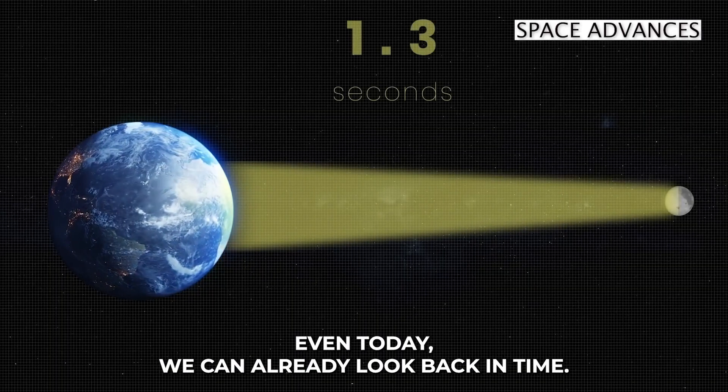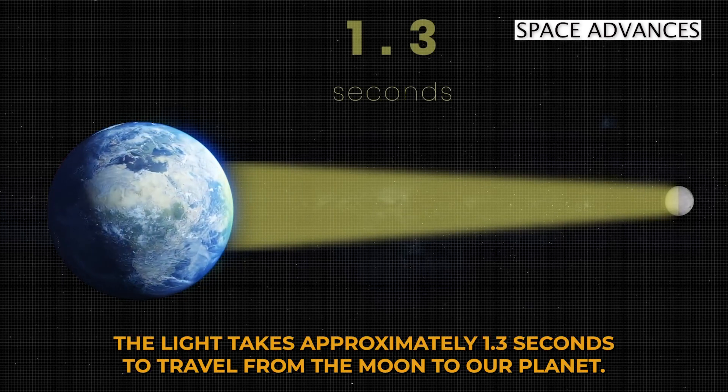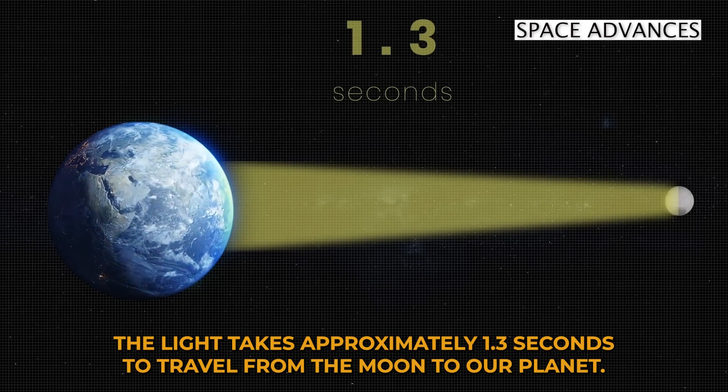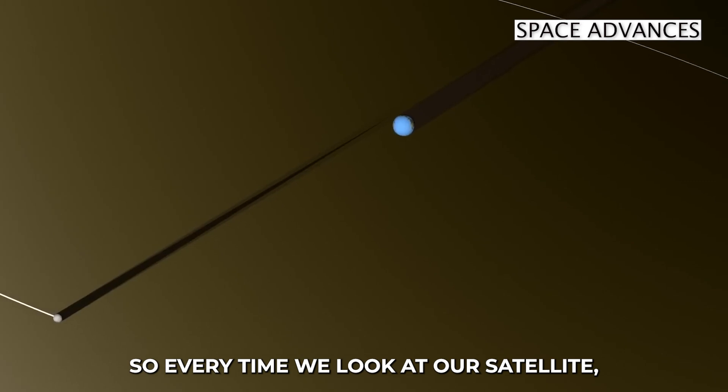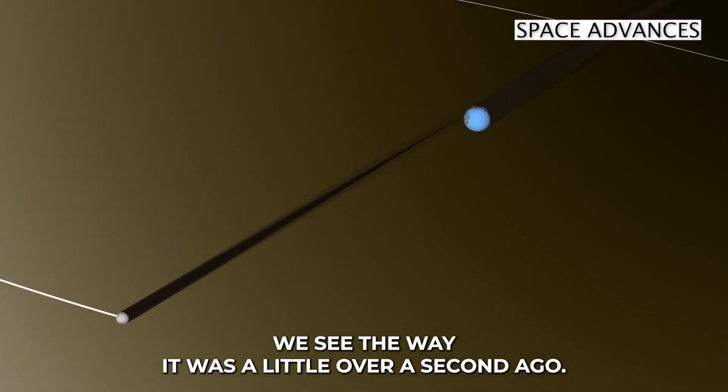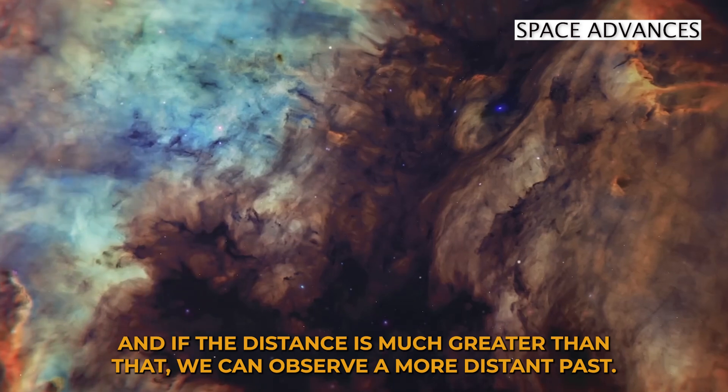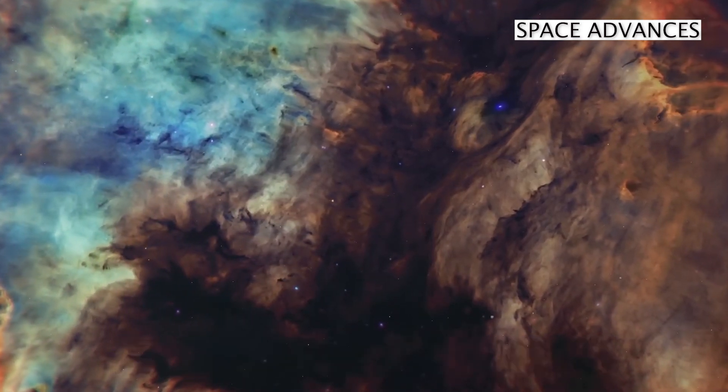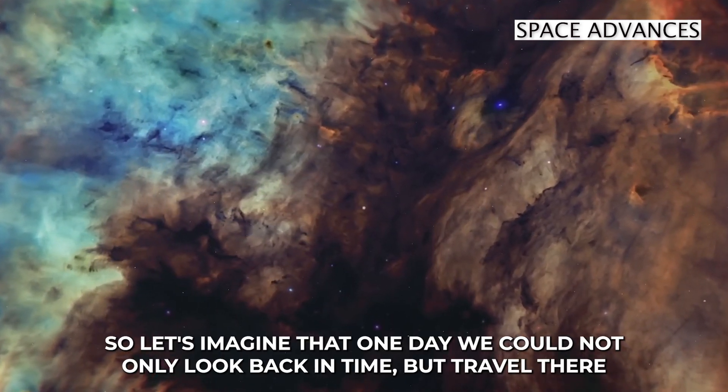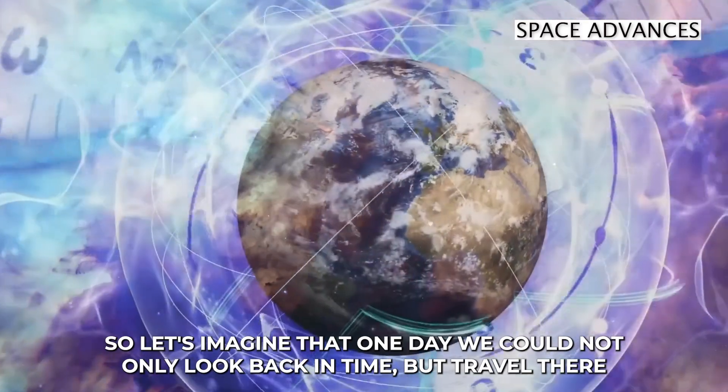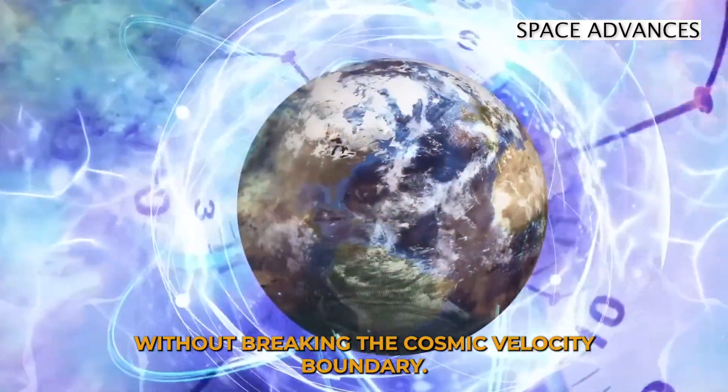Even today, we can already look back in time. The light takes approximately 1.3 seconds to travel from the Moon to our planet. So every time we look at our satellite, we see the way it was a little over a second ago. And if the distance is much greater than that, we can observe a more distant past. So let's imagine that one day, we could not only look back in time, but travel there without breaking the cosmic velocity boundary.